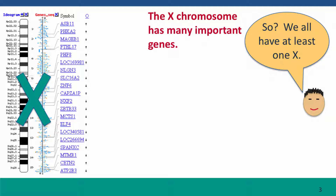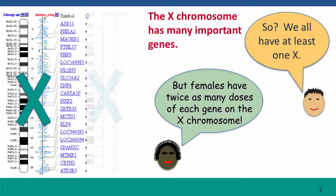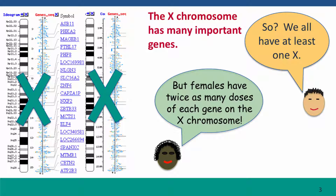You might think: we've all got at least one X chromosome, we should be okay. But females have twice as many doses — they have two copies of each gene. And if genes in females are expressed at the same level from each X chromosome as from the single chromosome in males, females are going to have twice as much of every protein made from the X chromosome as males do, but the same amount of all proteins made from the autosomes. That creates an imbalance within the cell, with the 2,000 X chromosome genes being in different proportions in males and in females.